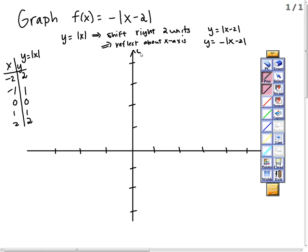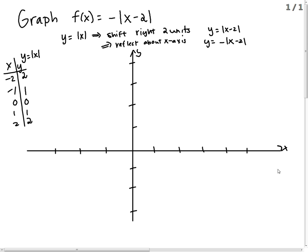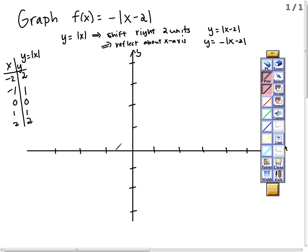Let's just start here. I'll start with black. So negative 2, positive 2, negative 1, 1, 0, 0, and 2, 2. There is my original in black: absolute x.